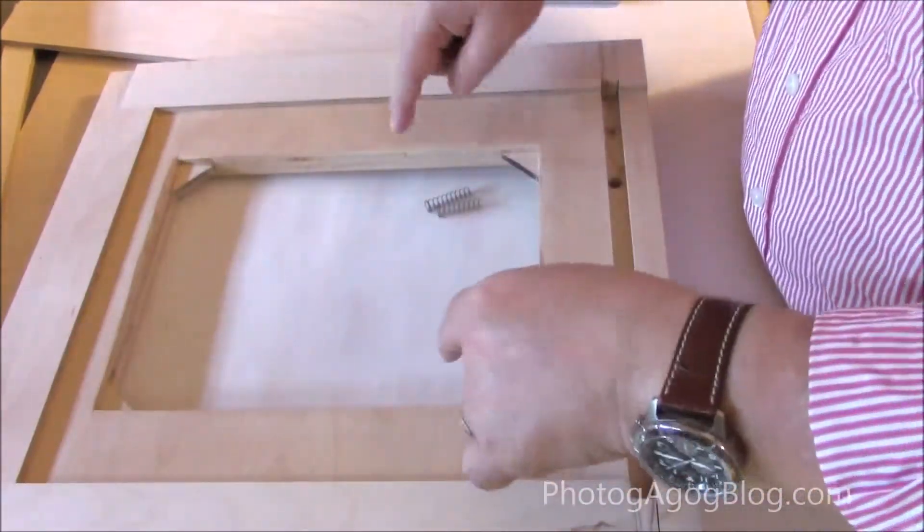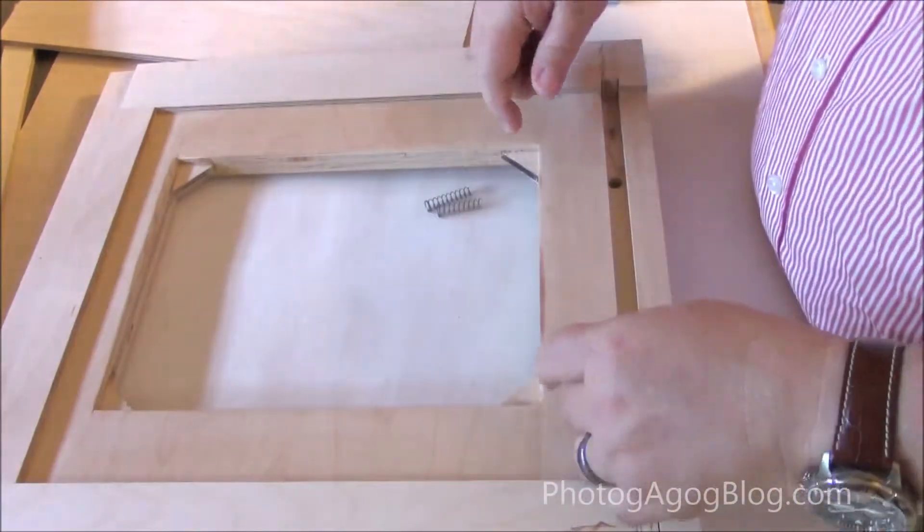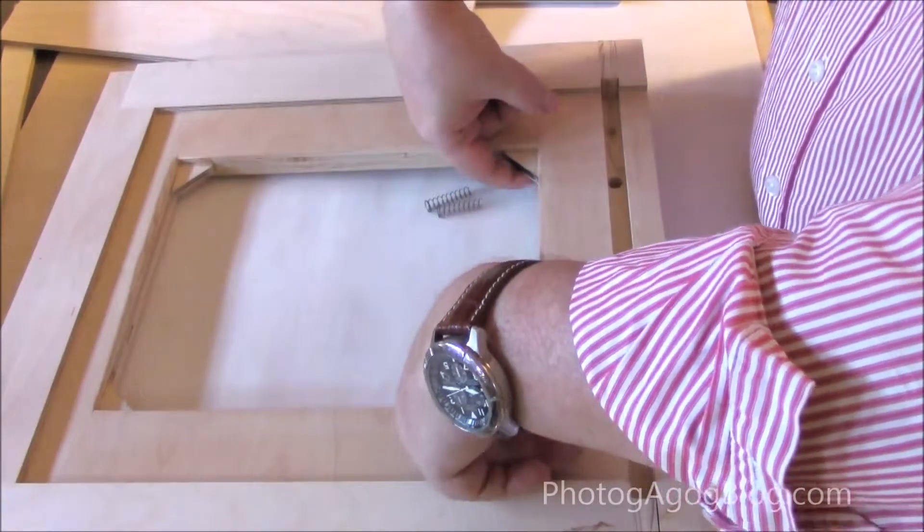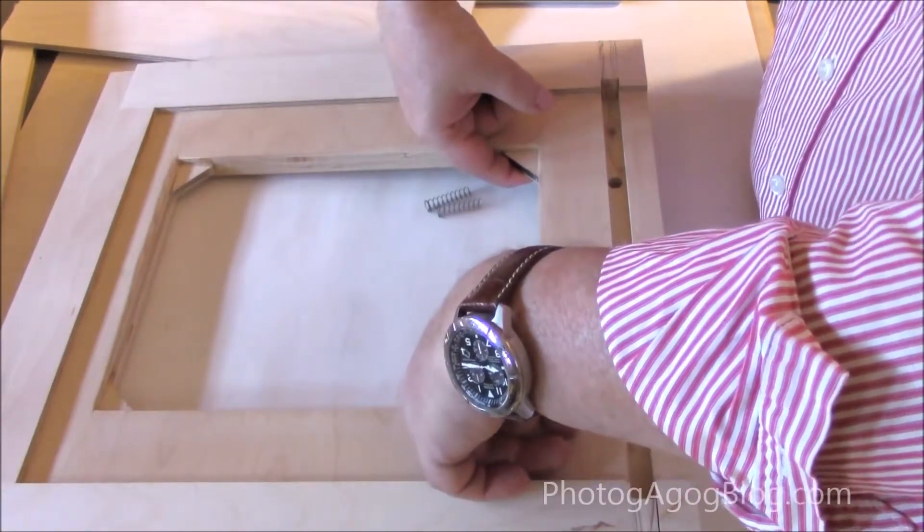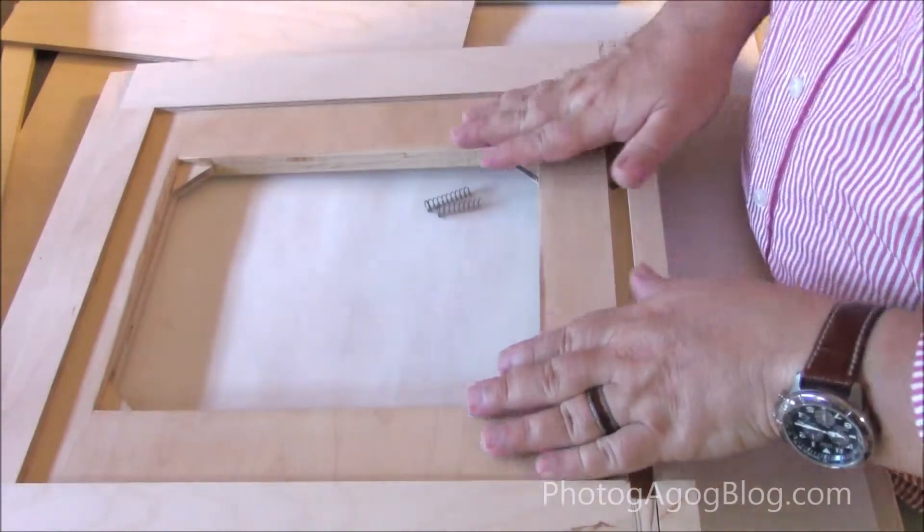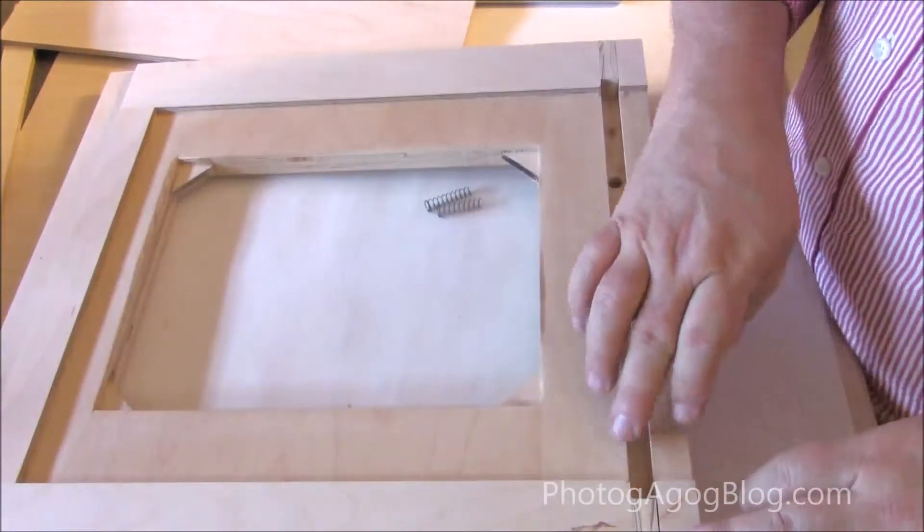The film goes right here. This is actually the front. The film is pushed in from the back so it will be held in from the back. And right here is where the dark slide is going to go.